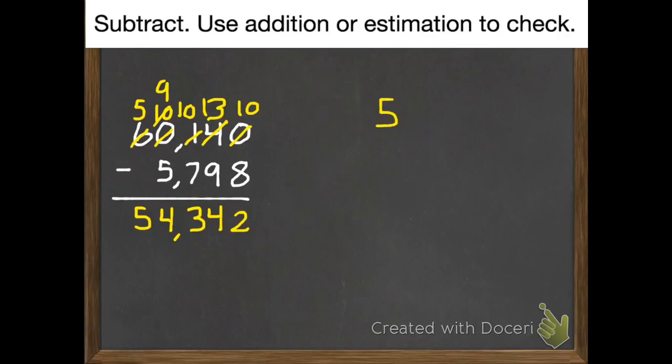Now I'm going to check my work. 54,342. Now we're going to add 5,798. And our answer, our sum, should equal 60,140. So let's see if it does.